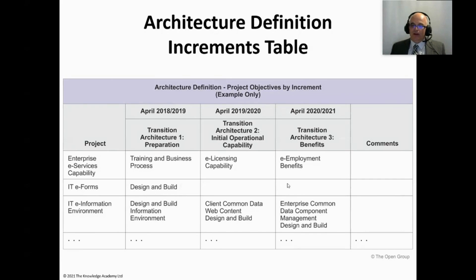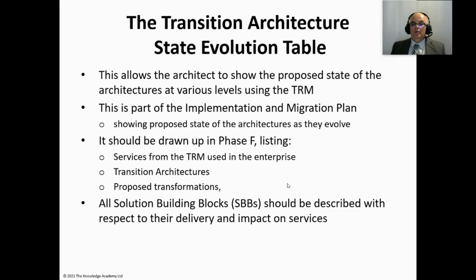As a planning tool, it's more likely — certainly at the capability architecture level — to be created by the planning framework, as it is very much looking at deliverables from various projects. We identify the transition architectures in the architecture definition increments table and reflect those in the architecture state evolution table, which allows the architecture to show the proposed state of the architectures at various levels. The technical reference model (TRM) is mentioned here, but the Open Group themselves have said it is now more historical than anything else, so we can ignore that part.